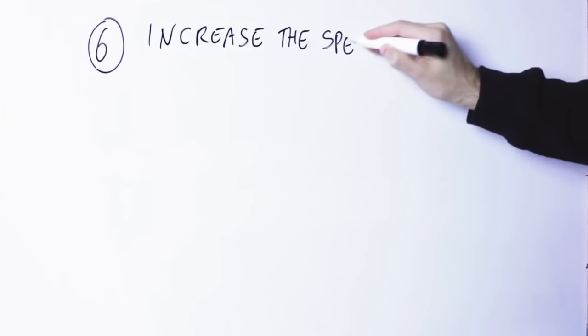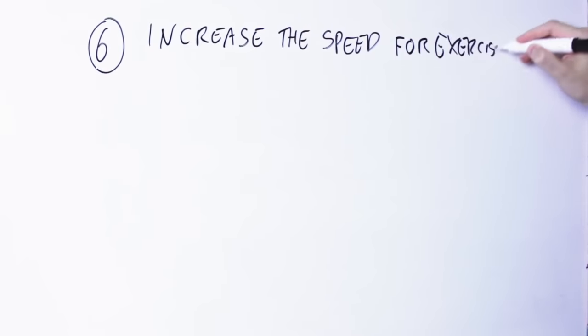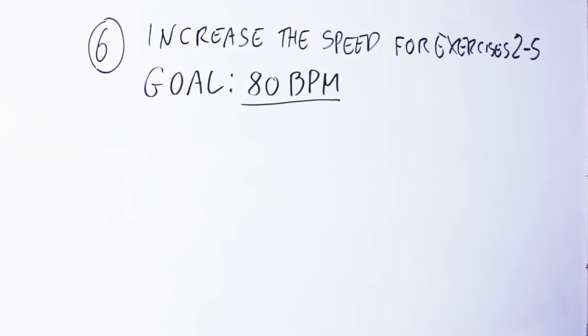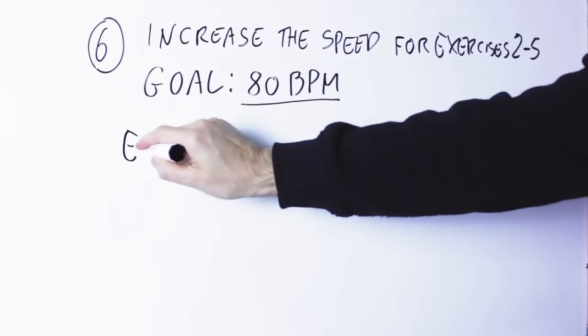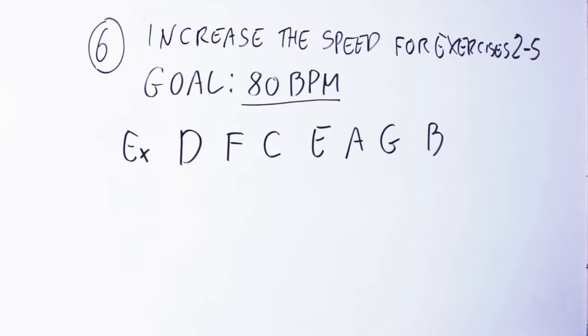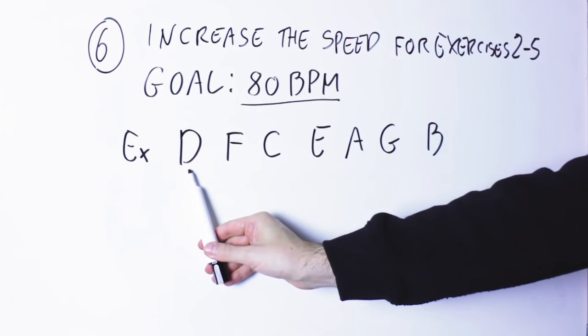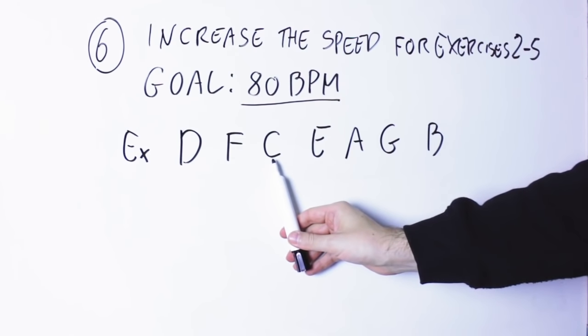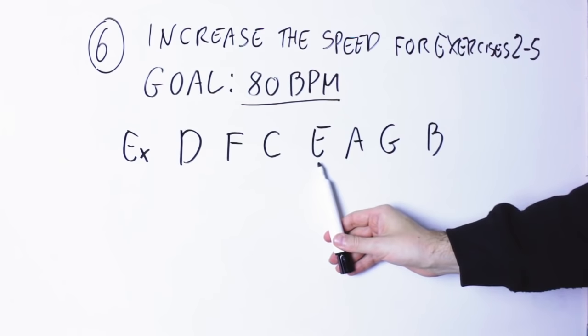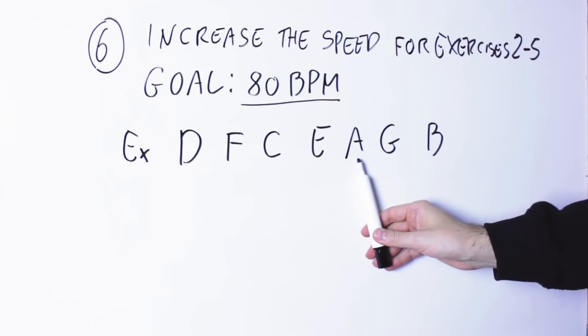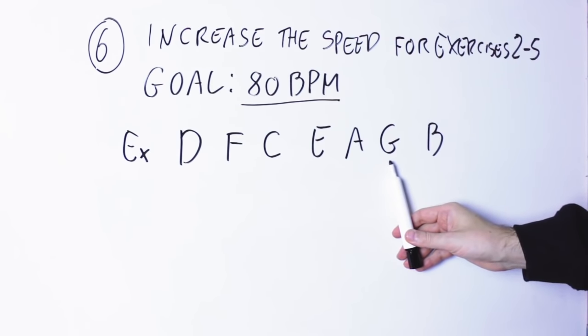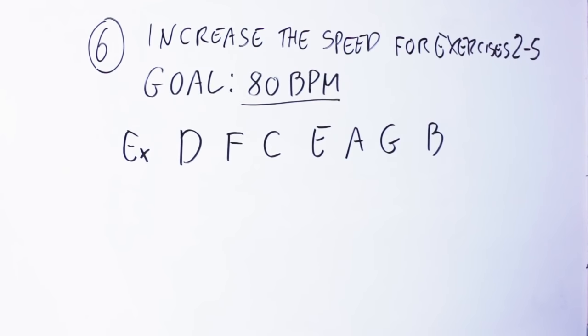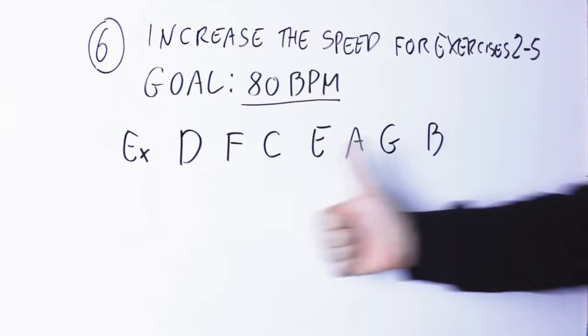Once you can do this exercise, then you can go to exercise number six. In exercise number six, we finally start to increase the speed. And the idea here is to do the exercises from two to five, gradually increasing the speed. When you get to 80 beats per minute and you can do exercise number five with the random notes at 80 beats per minute, then you're done.